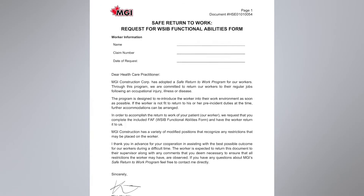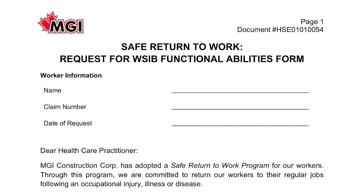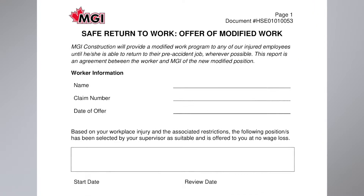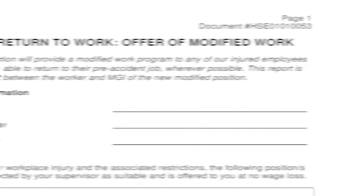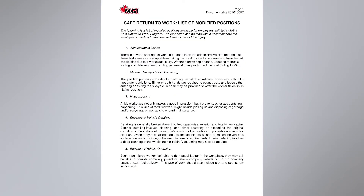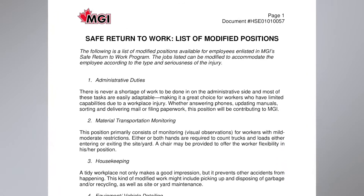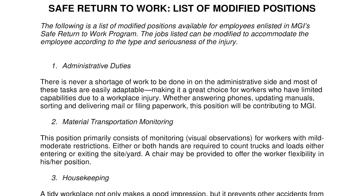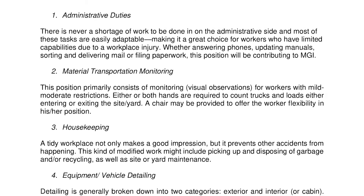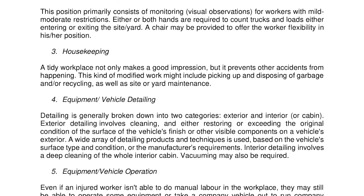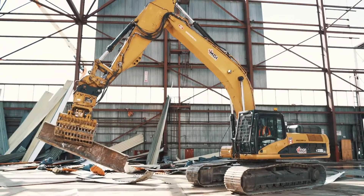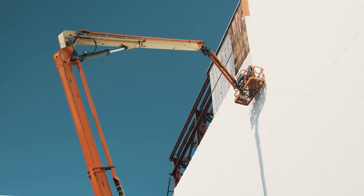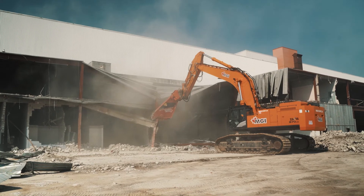As soon as the employee has been cleared by their physician, if they require modified work, MGI management will meet with the employee to create a personalized Safe Return to Work plan. MGI has a list of modified positions that will allow workers to reintegrate sooner without compromising their safety. Types of accommodations include administrative duties, inventory management, training or recertification, and traffic control. Our Safe Return to Work program depends on the ongoing communication between both the worker and supervisor to ensure the safety of all employees.